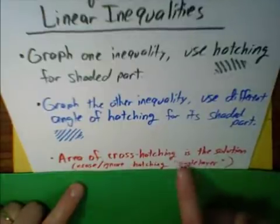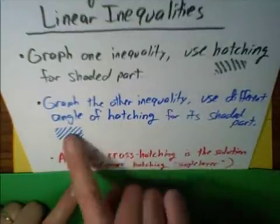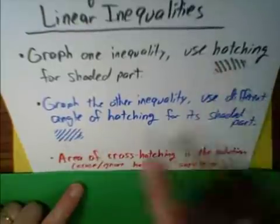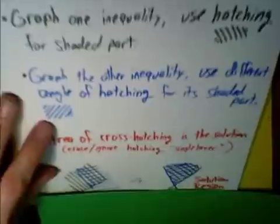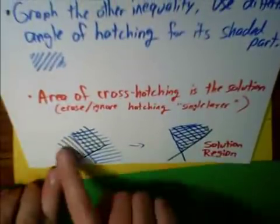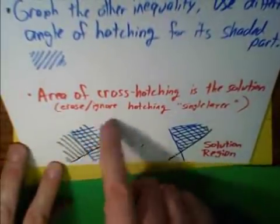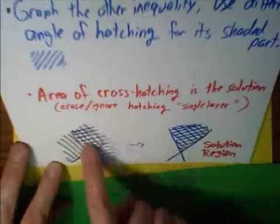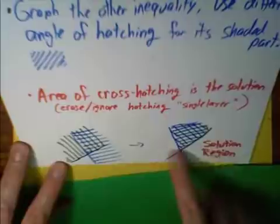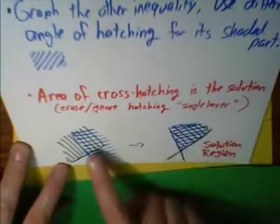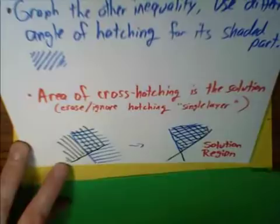The hatching that was only single layer, like the hatching that only ended up being one layer deep and not cross-hatched, we're going to either erase or ignore. So if we're hatching one way, and then we hatch another way, this area of cross-hatching, that's the only solution. So this is what our solution may look like. In other words, we're just ignoring the other areas of hatching.